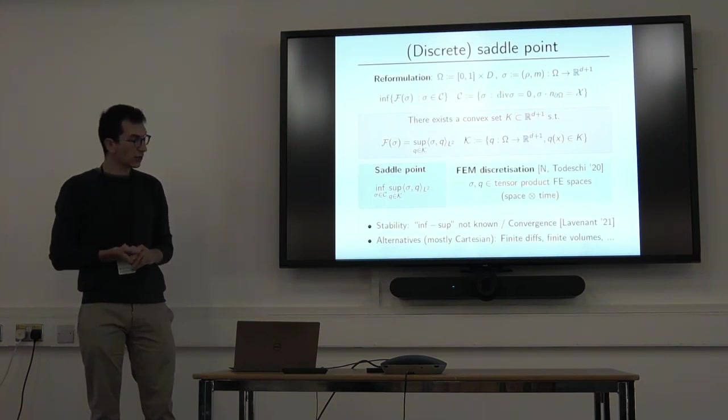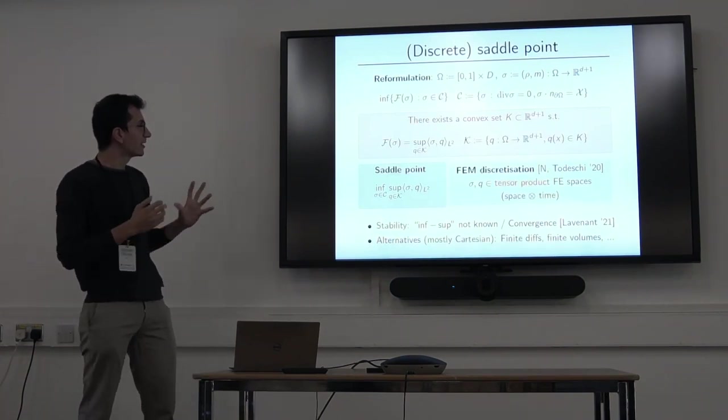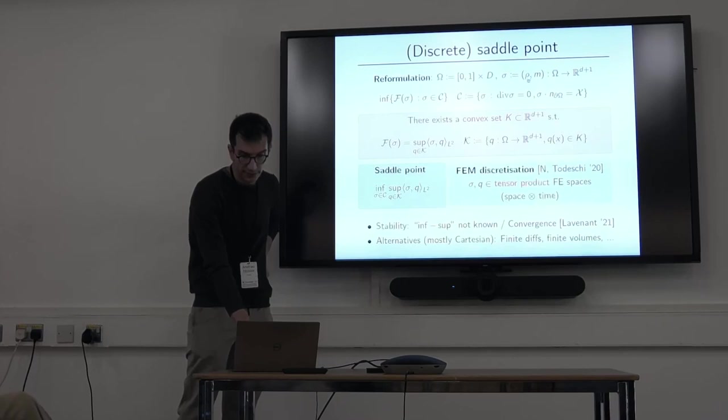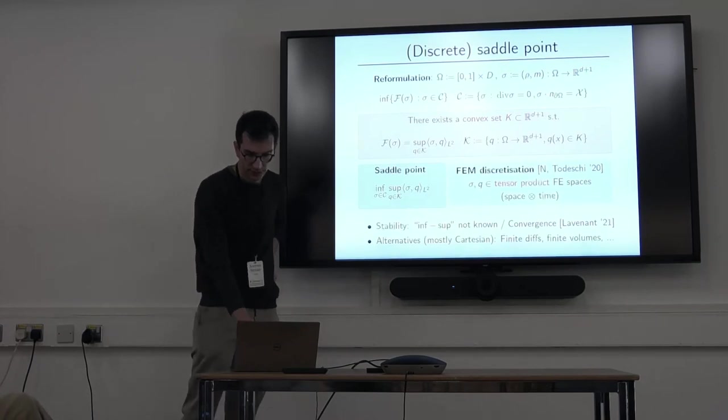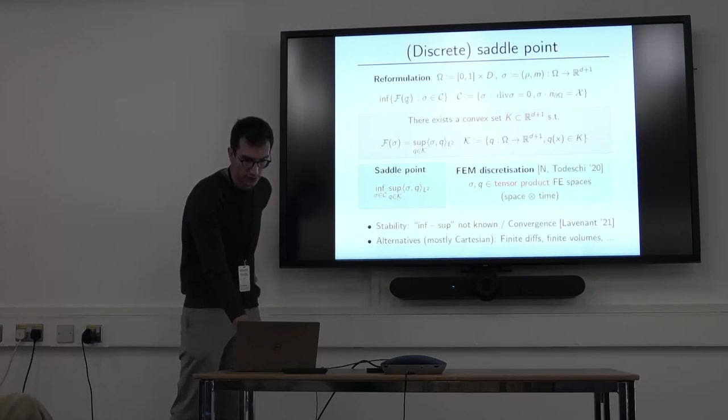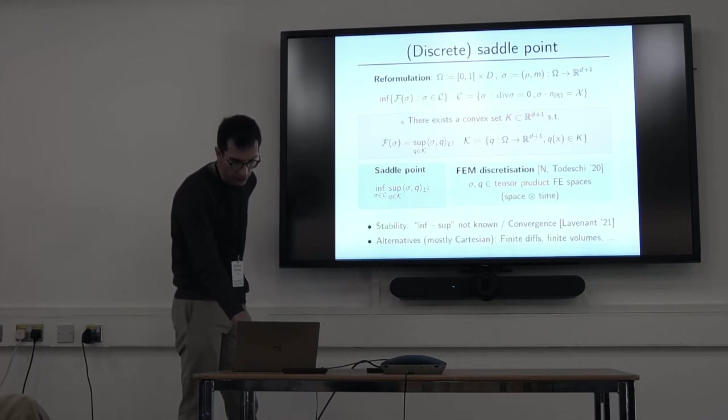So to start with, to talk about primal dual methods, first I need to talk about the saddle point structure of this problem, and the smart thing to do here is to put yourself in the space-time domain, which I call omega, so 0 to 1 is the time interval, and I call sigma here this vector field that is rho in the time direction and m in the space direction. So this is d plus 1 domain, so d plus 1, R to d plus 1. And so our problem, I can write it like this, so I am imagining some function of this sigma, which is the kinetic energy that I wrote before, and the constraint now is just saying that the divergence of this vector field is 0. So it somehow resembles some classical variational formulation, for example the Poisson problem.